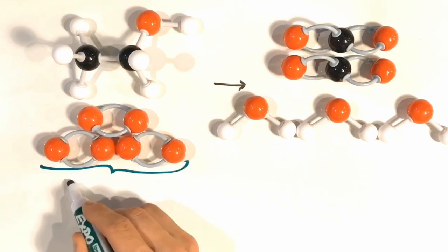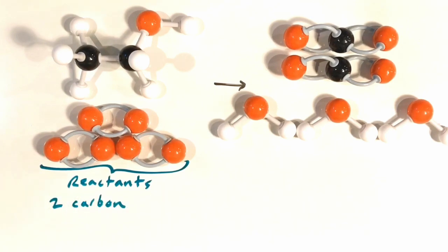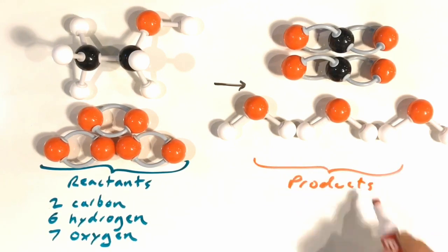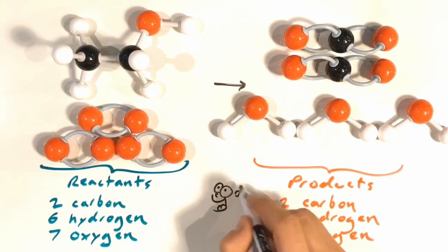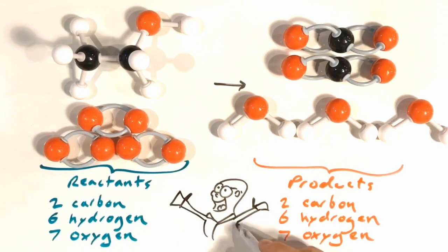Alright, now that we've added four more oxygen atoms, let's count everything up. In our reactants, we have two carbons, six hydrogens, and seven oxygens. And in our products, we have two carbons, six hydrogens, and seven oxygens. This is fantastic because it means that we have balanced our chemical reaction. We know exactly how many atoms of each element come in and out of this chemical reaction.